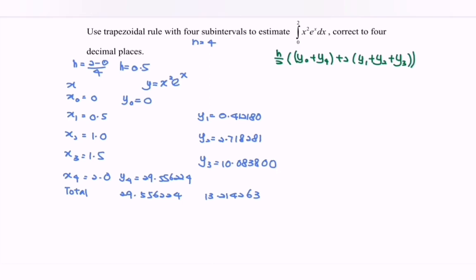So, substitute the values, we have 0.5 over 2, bracket, we have 29.556224, plus 2 multiply 13.214263. So, by referring to the calculator, we will have the value 13.996187.